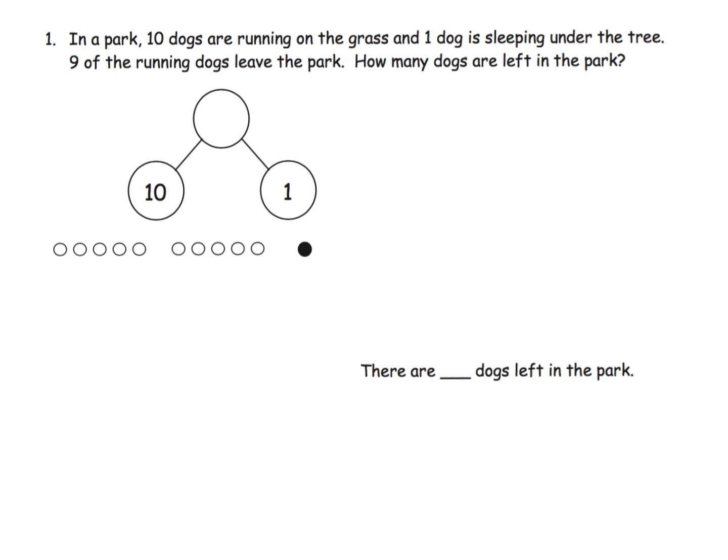So it says, in a park, 10 dogs are running. All right, so that's running. And one is sleeping. Nine of the, so what we can do is we can now know that there's 11 dogs at the park. And it says nine, now you'll notice they drew the five groups. I personally prefer these to be in 10 frame form, but they didn't do it that way. That's fine. We're not going to get all freaked out about that. But it says nine of the running dogs leave the park. So these four plus these, I mean these five plus that four, leaving these two dogs. So how many dogs are left in the park? And the answer is two.